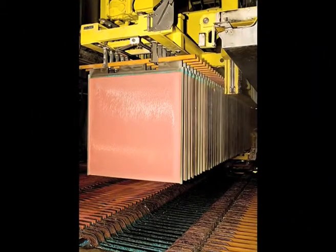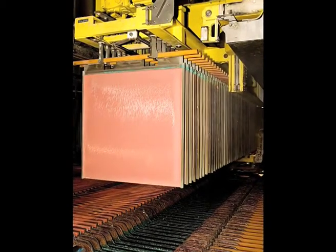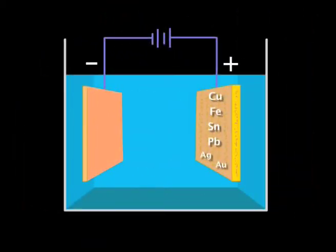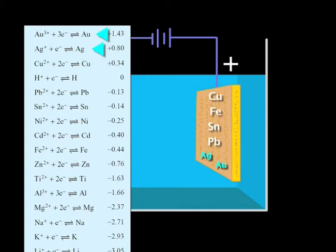Our copper is now refined. But it gets better. Remember that impurities in the anode include gold and silver? These are both unreactive metals.